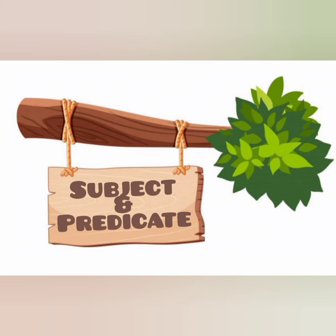On the other hand, the predicate says what is said about a person or a thing. Now let's look at the examples of the predicate: drinking tea, tells the time, eats grass, and is eating an ice cream. These parts of the sentence are its predicate, where they describe what that person or thing is doing.